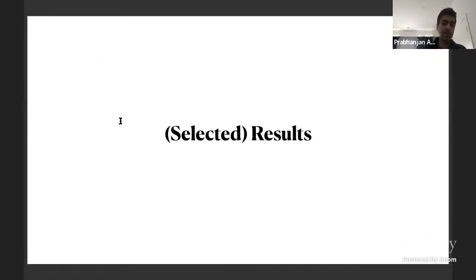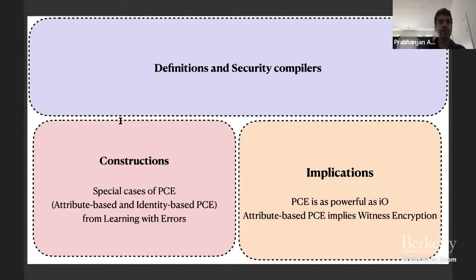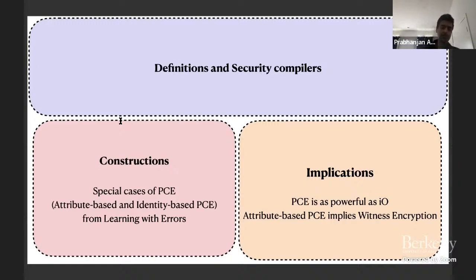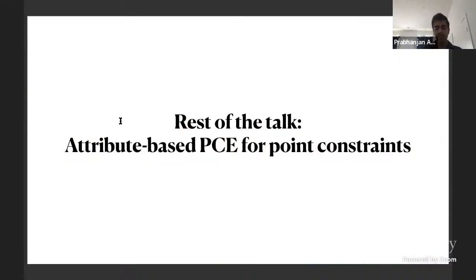We give a set of definitions for pre-constrained encryption and security compilers. We show how to boost semi-malicious security to malicious security via a general compiler. We give constructions of special cases from learning with errors, and show the most general case is as powerful as IO. Even special cases like attribute pre-constrained encryption imply witness encryption.